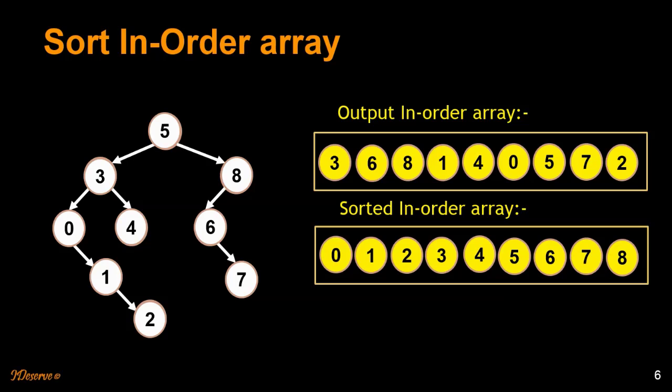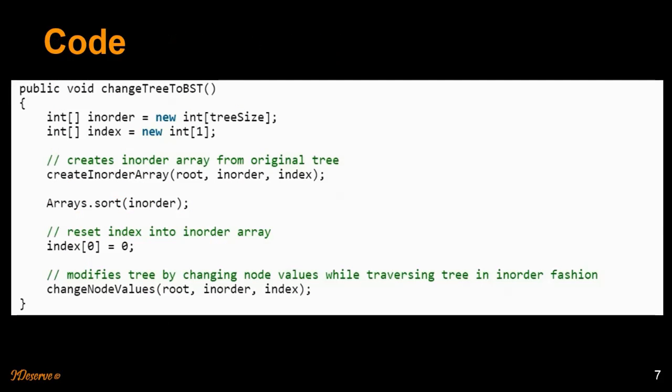Let's go ahead and look at the code. The code is pretty straightforward. There are three steps: first, we create an inorder array; then we sort the inorder array; and then we change the node values in the given binary tree with the corresponding elements in the sorted inorder array. Those are the three steps.